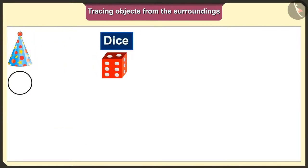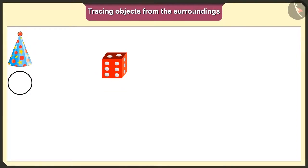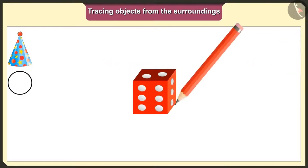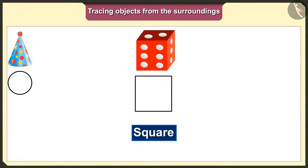Now we will trace the dice. This dice's base is a square, so we will get a square shape when we put it on paper and trace it.